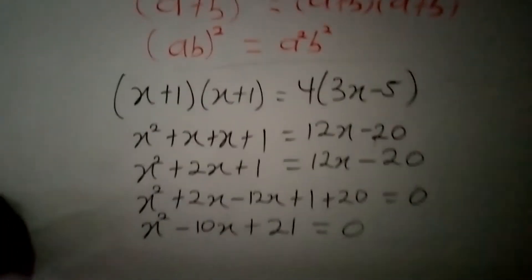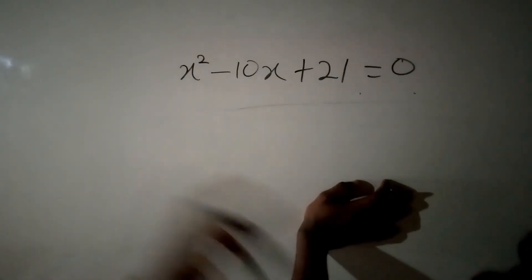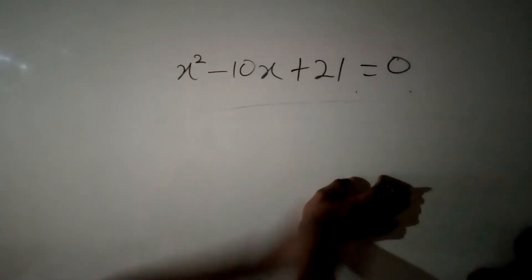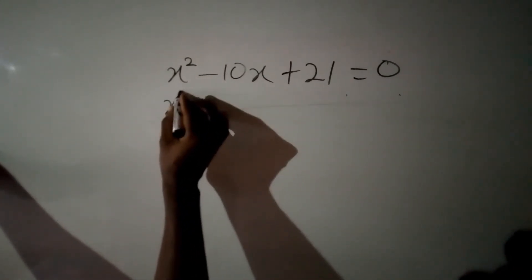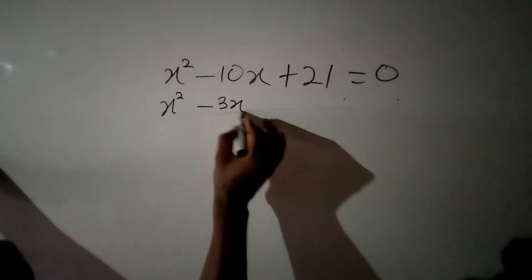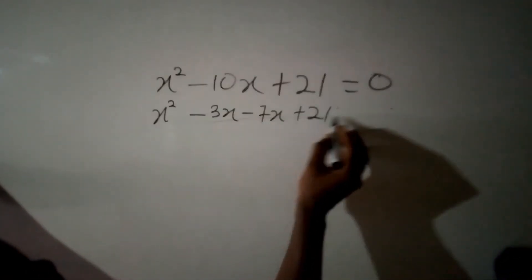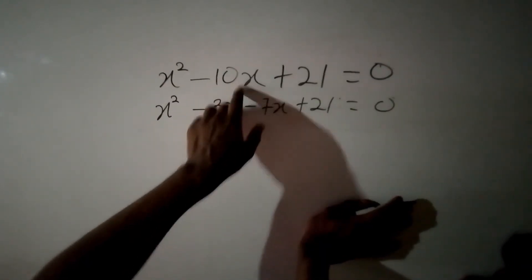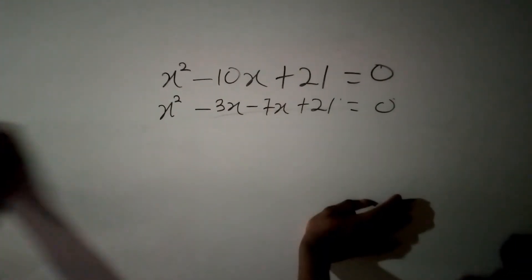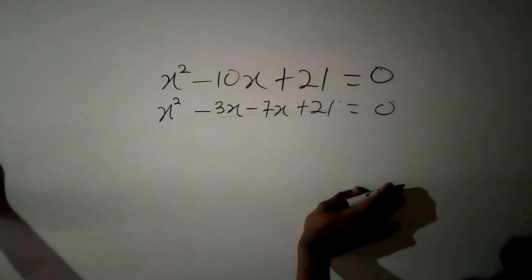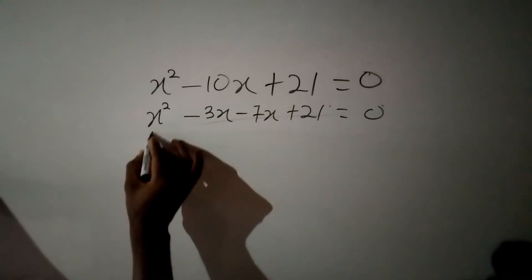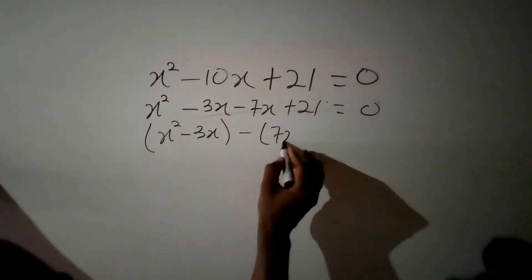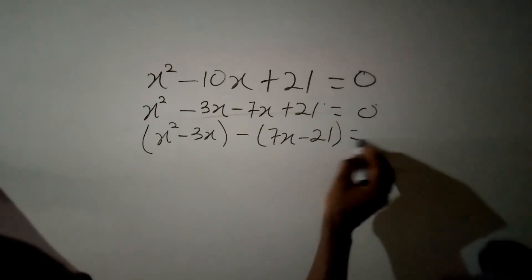So our negative 10x suggests two factors of our constant 21. We use x squared minus 3x minus 7x plus 21 equal to 0. Please note that the sum of the factors should give you back your negative 10x and the product should give you the constant 21. We then group these terms into two separate brackets: x squared minus 3x, and negative 7x plus 21, equal to 0.